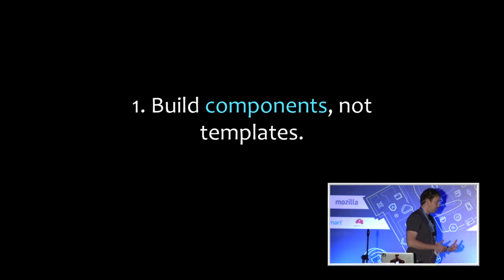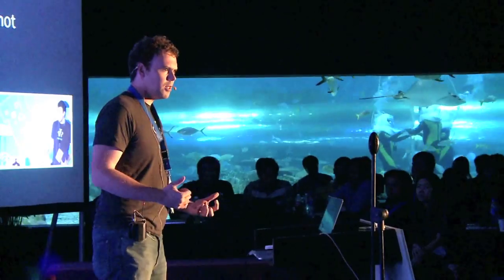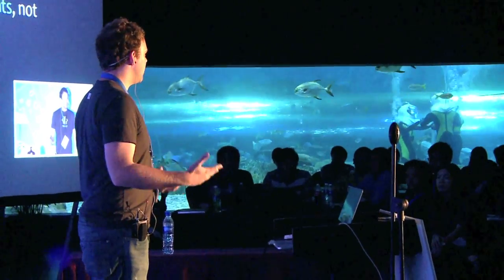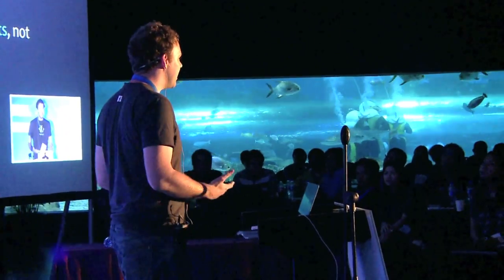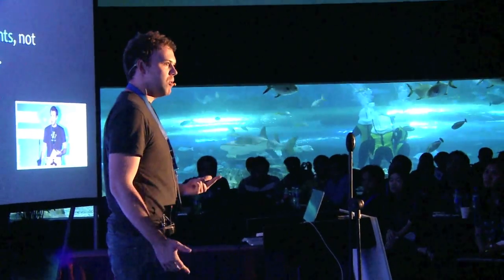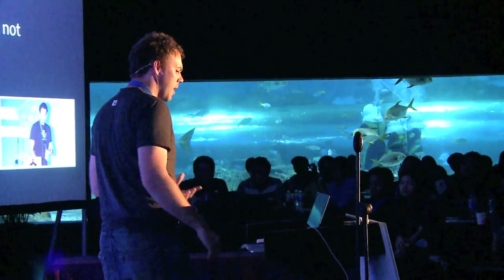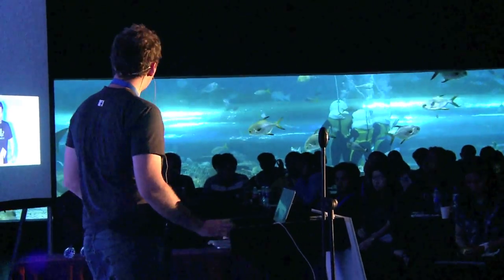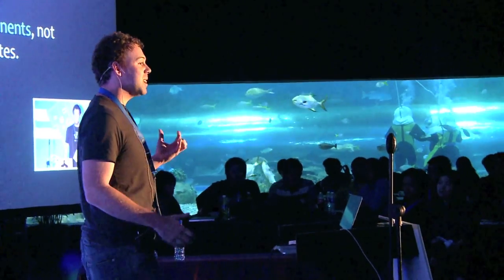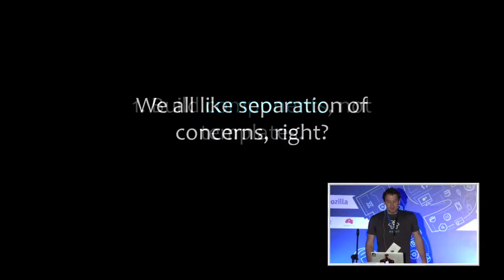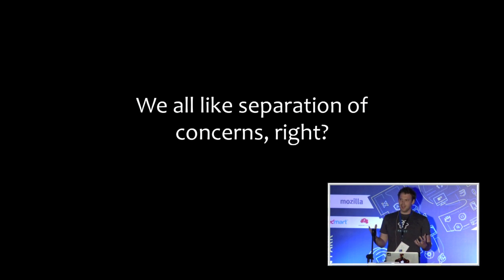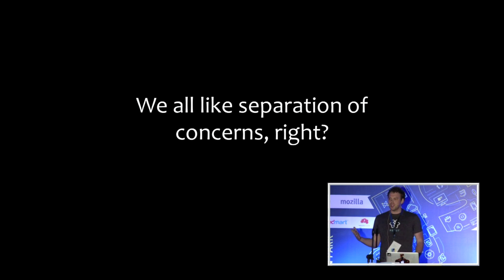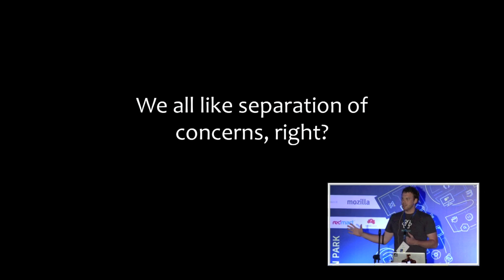Let's dive into the first thing: building components and not templates. Everyone here has built a UI with JavaScript. Has anybody used a client-side templating library? Handlebars is a really high-quality one, and a lot of people use them on the server as well. Cynically, we think of components as mixing markup and display logic. But we do like separation of concerns — that's kind of the number one reason for using a template. A templating language takes in a data structure, combines it with an HTML document marked up with special directives, and spits out static markup.